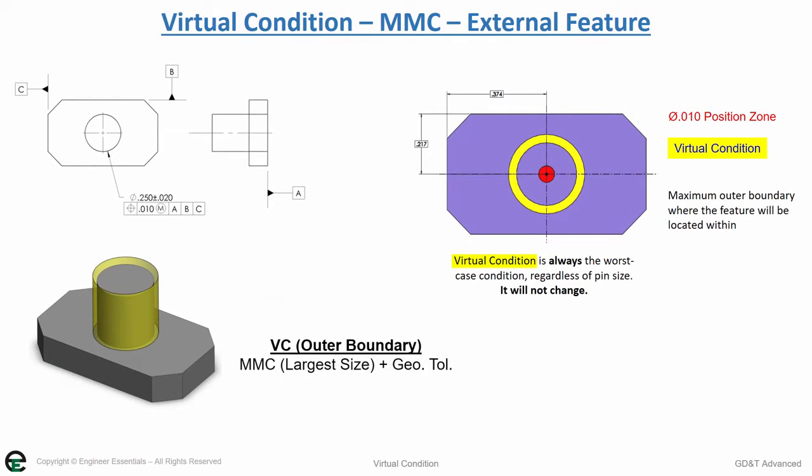To calculate the virtual condition, we take the MMC, the largest size, plus the geometric tolerance.